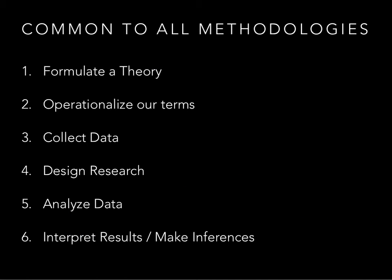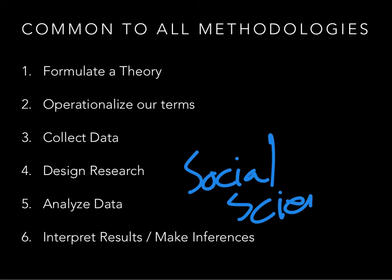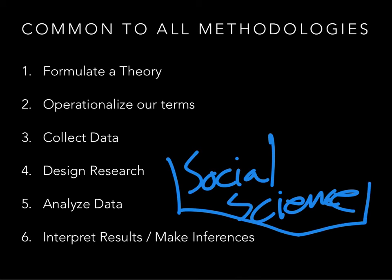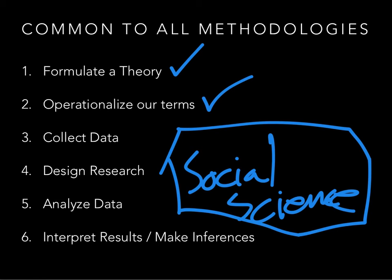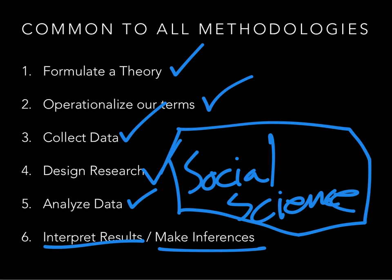There are lots of methodologies in science, and we'll be looking at social science methodologies, since political science is a form of social science. But all methodologies have basic commonalities: they formulate a theory; they carefully operationalize their terms — making them clear, precise, understandable, and measurable; they include data collection; a research design for how to look at that data; data analysis to make yes-or-no claims about what's occurred; and finally, ways of interpreting the results in accordance with the theory.